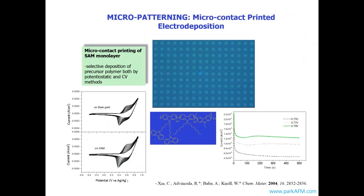Polymers can be patterned and deposited as films on surfaces. We demonstrated deposition of a precursor polymer on a micro-contact printed electrode, resulting in an interesting blue array of polymer. This was done by cyclic voltammetry or potentiostatic methods, going back about 12 years ago.